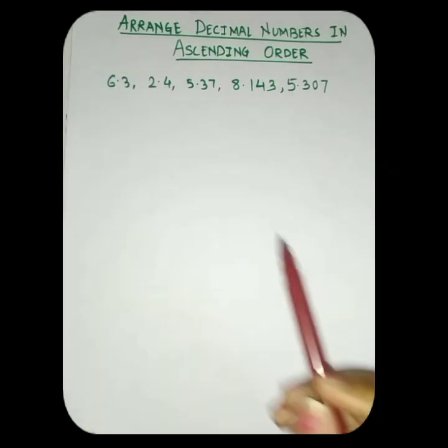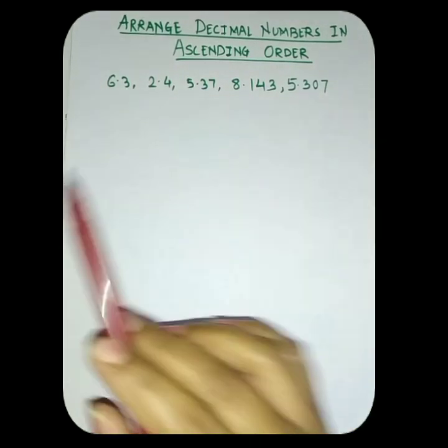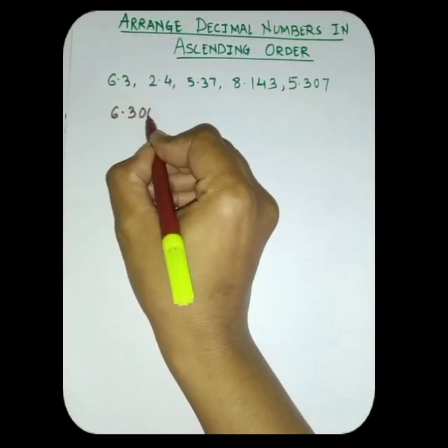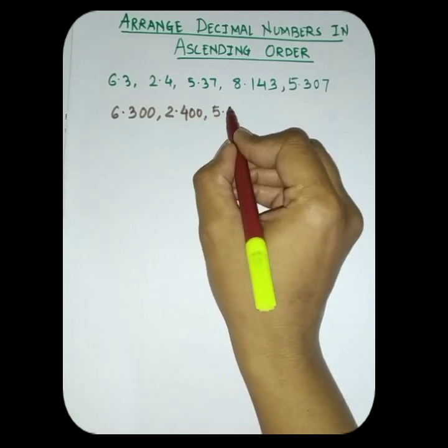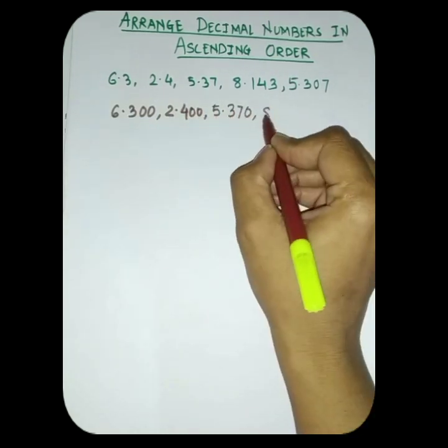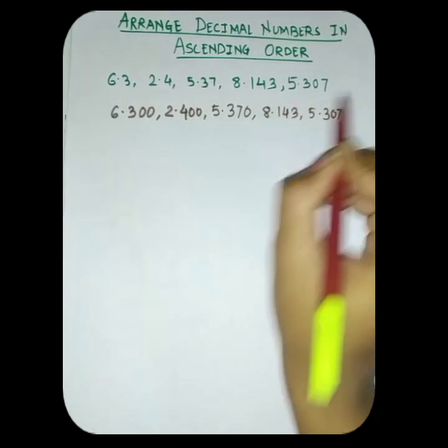Means if any number has 3 digits after a decimal point, others also have to be converted. So we can write the 6.3 as 6.300, 2.4 as 2.400, 5.37 as 5.370, 8.143 as it is and 5.307 as it is.